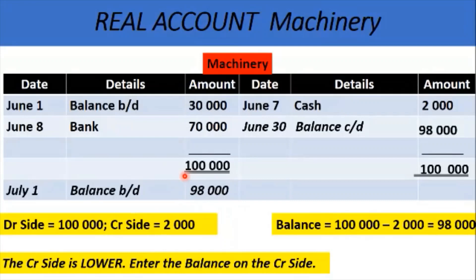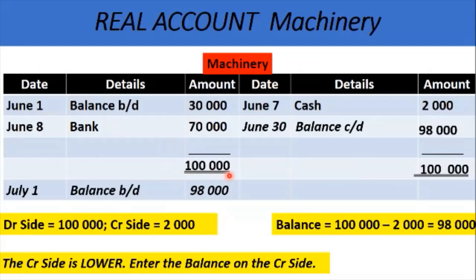One thing to notice is that we have a double line under the totals — these two lines — and the totals are on the same line. The balance carried down is above the totals, and the balance brought down is under the totals. This double line indicates that June has finished and represents the final total. When you see a single line underneath a figure, it's a subtotal, and that is understood in accounting.